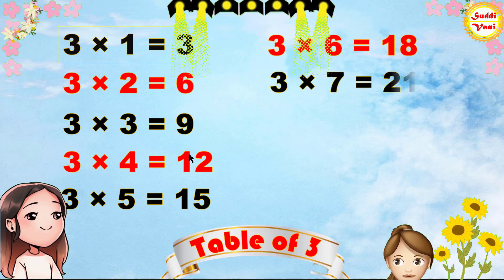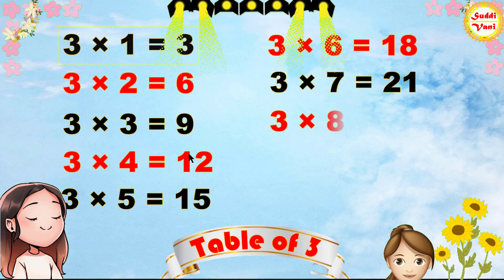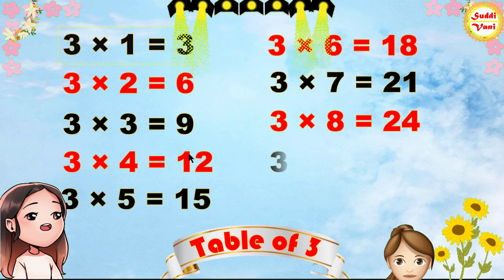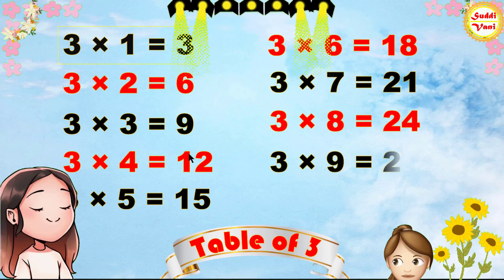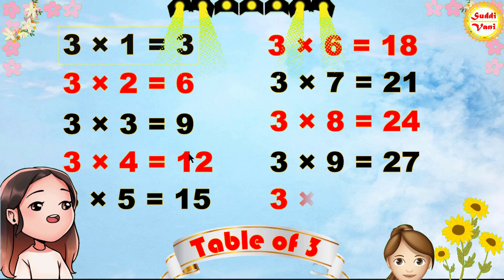3 7's are 21, 3 8's are 24, 3 9's are 27, 3 10's are 30.